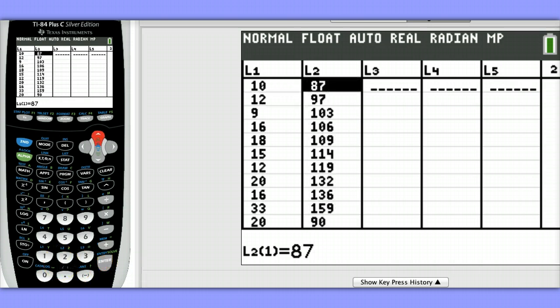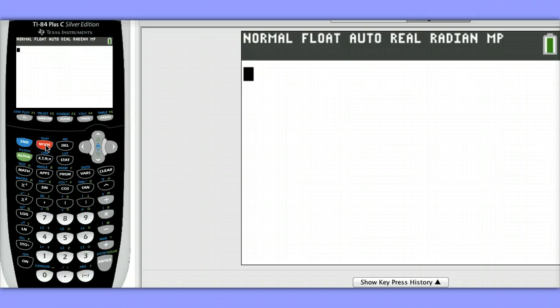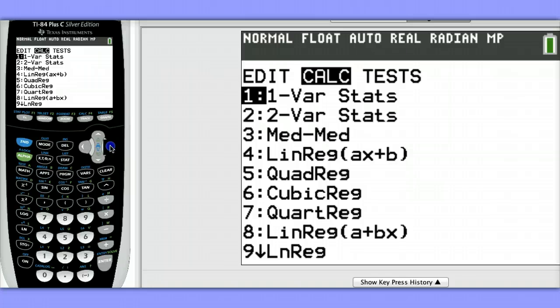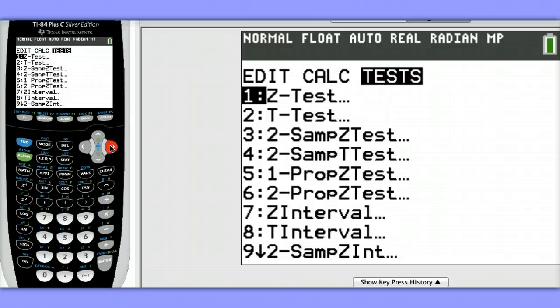Now that our data is entered, we're ready to run our linear regression t-test. To do this, hit Second Mode to get back to the home screen. Then, hit Stat, go over to Test, choose Linear Regression T-Test.